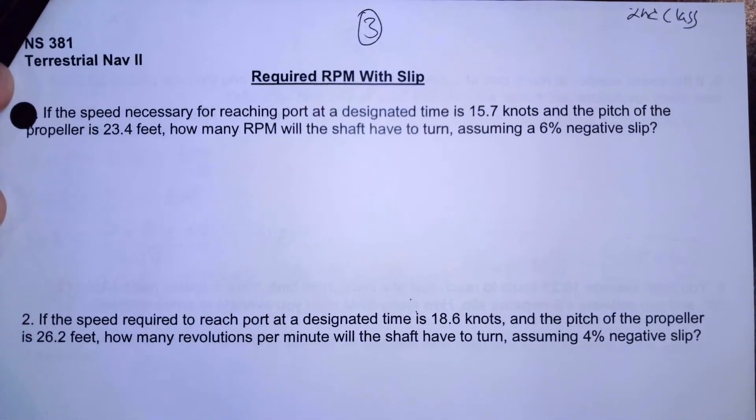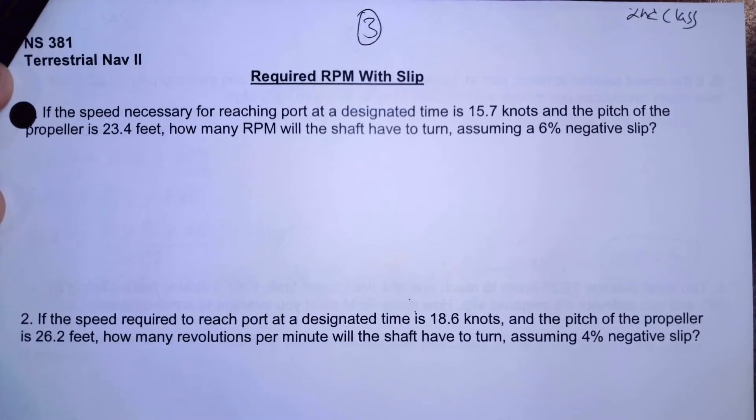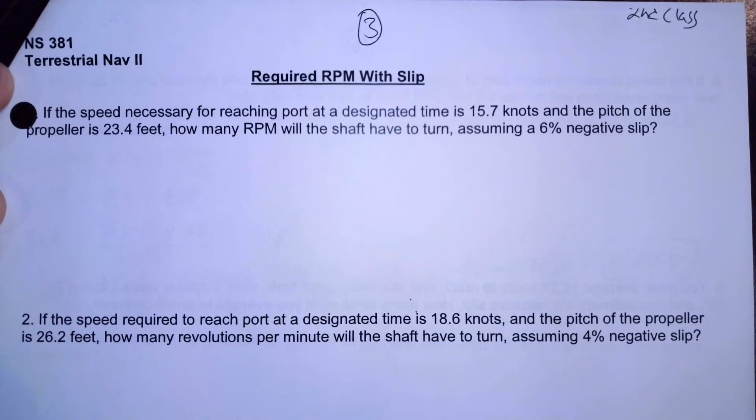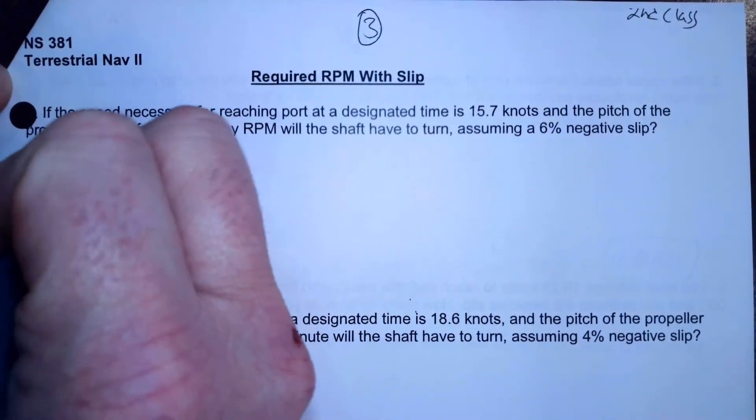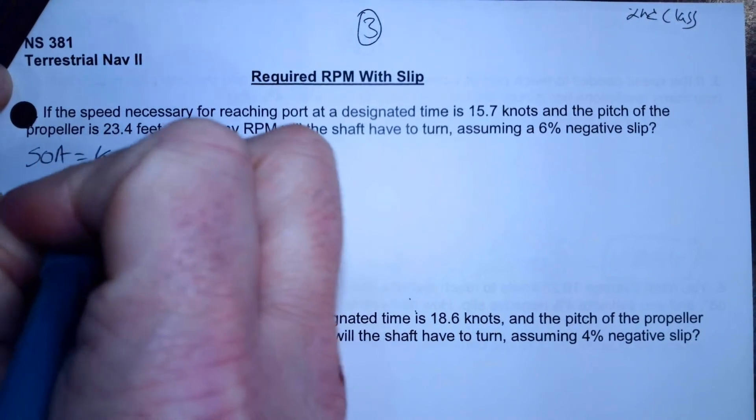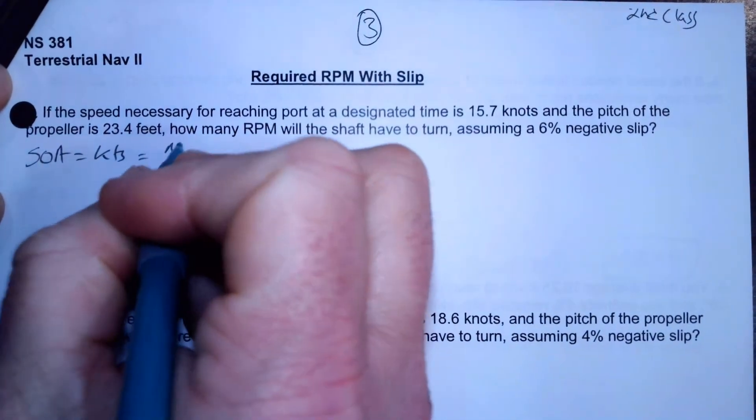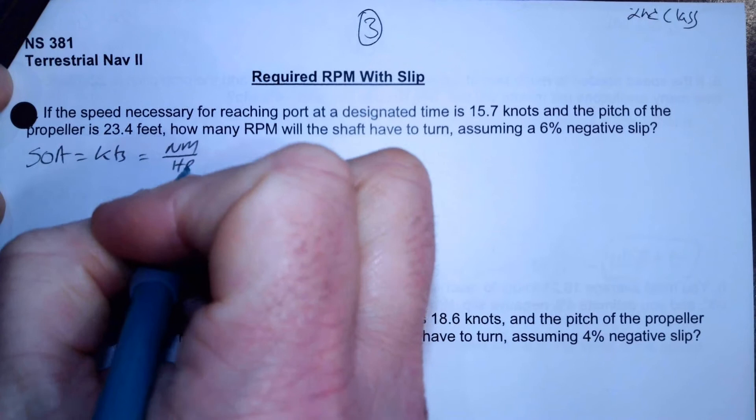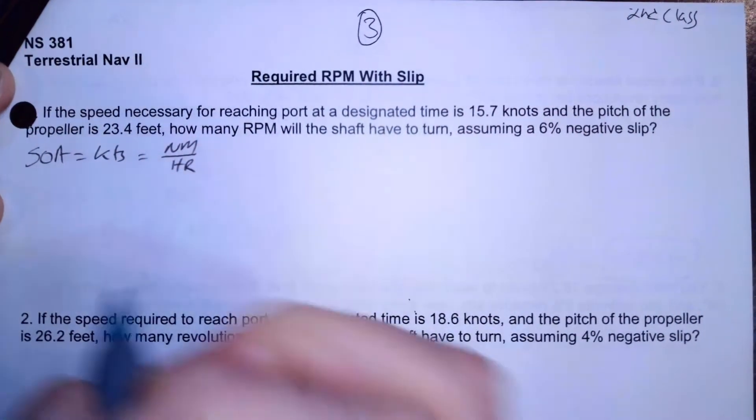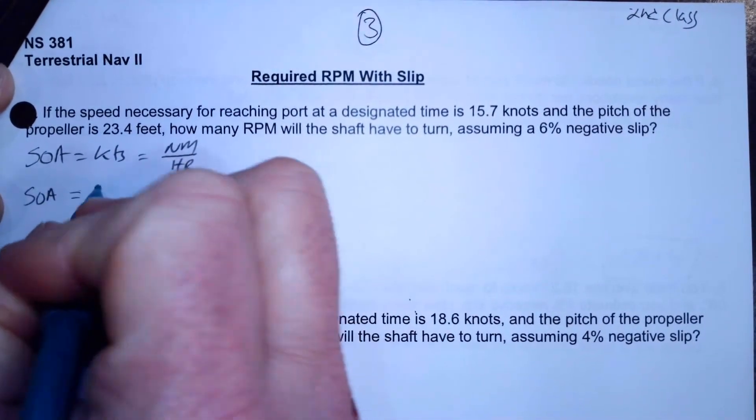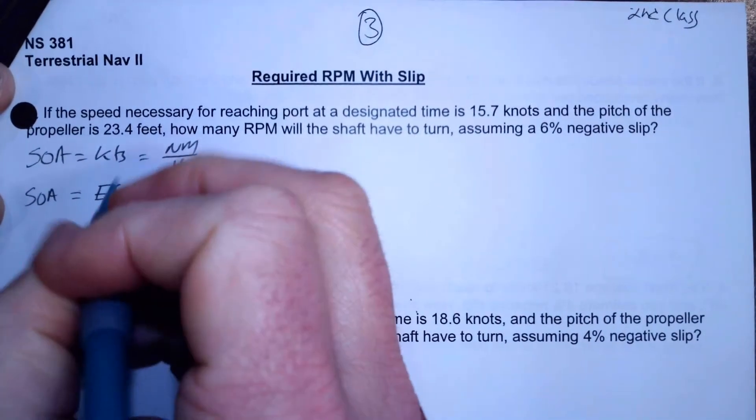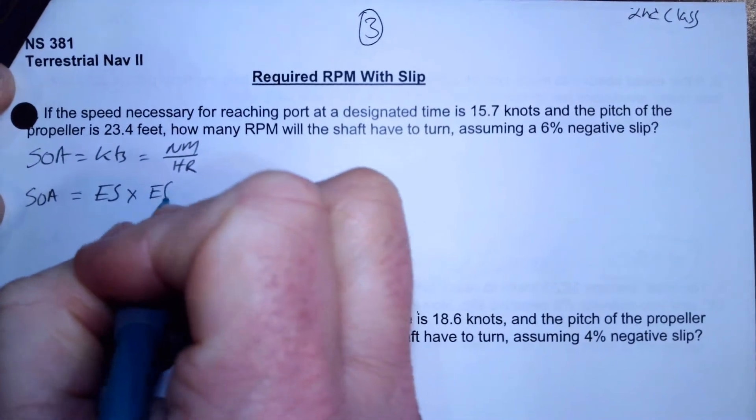So to do this, I'm going to use the speed of advance formula. And then once I've got the speed of advance formula, I'm going to solve it for RPM. I want to remind you that speed of advance is in knots, and knots are nautical miles per hour. So what is that formula?